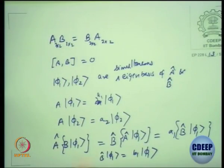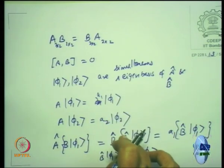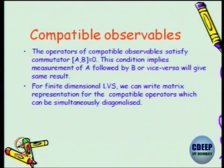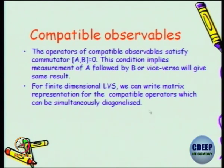We are also assuming that both the eigenvalues of A and B are non-degenerate. You could have the same eigenvalue with a different linearly independent state — that case we are not considering yet. So I have proved that for finite dimensional linear vector space, the compatible observables have matrix representations which can be simultaneously diagonalized.